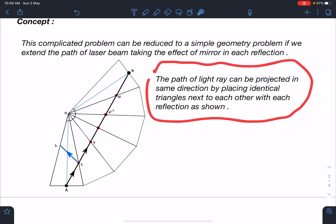So path of light ray can be projected in the same direction by placing identical triangles next to each other with each reflection as shown in the figure. And all these angles are θ, θ, θ, θ. Now you can see here this is first reflection here and this is the second reflection here.